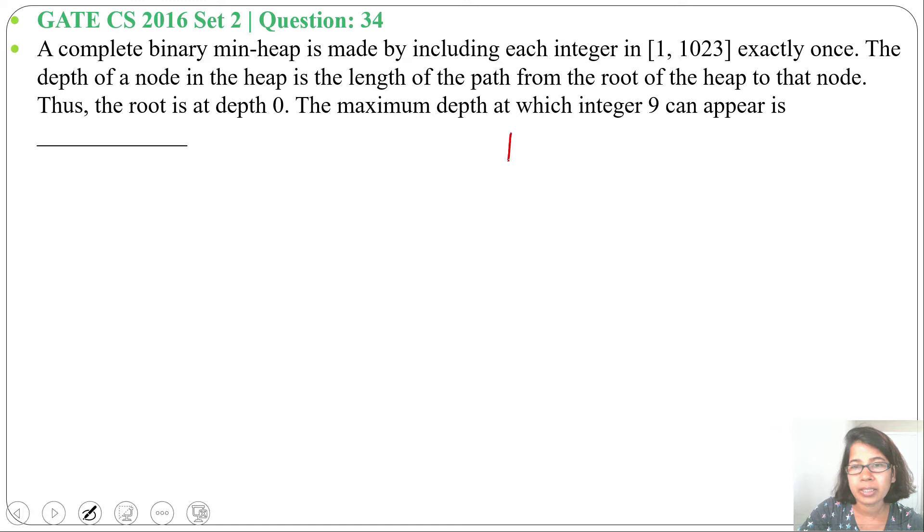Let me take a small example. Suppose the range is 1 to 7, so numbers are 1, 2, 3, 4, 5, 6, 7.